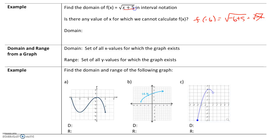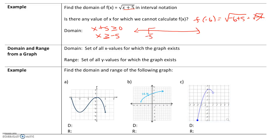So for our domain, the expression x plus 5 can only have a value of 0 or greater, which means x can only have a value of greater than or equal to negative 5. That's why negative 6 was not in our domain, because negative 6 is less than negative 5. Since we have a greater than or equal to, we get a bracket on negative 5, and our numbers go bigger and bigger approaching infinity. So in interval notation, our domain is negative 5 comma infinity.